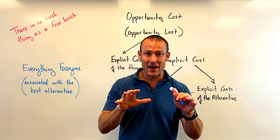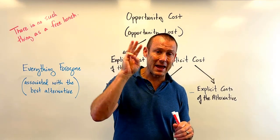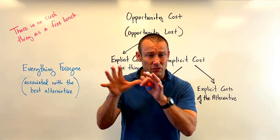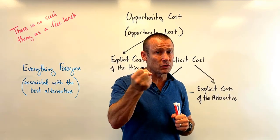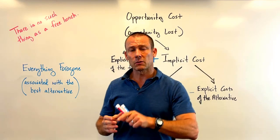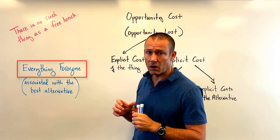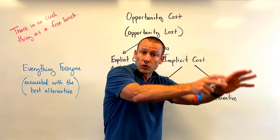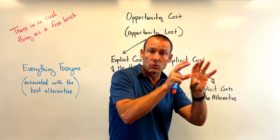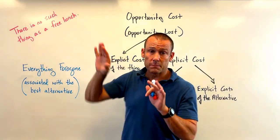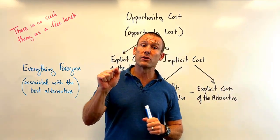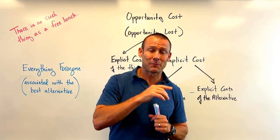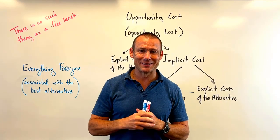Those were the three examples — McDonald's, Lisa's lemonade stand, and the Mumford & Sons ticket. If you can get the right answer for all three, you own this concept. Opportunity cost is everything foregone: not just the cash outlay, but also the alternative you are foregoing. There is no such thing as a free lunch because there is always an alternative to any decision — there's always an implicit cost, so there's always some cost, because cost is opportunity cost.